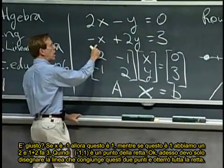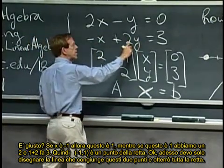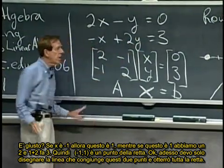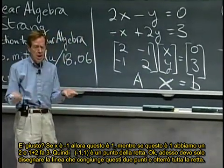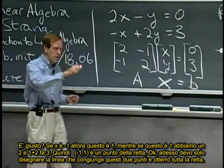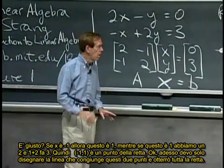If x is minus one, that's a one. If y is a one, that's a two, and the one and the two make three, and that point's on the equation. Okay, now I should just draw the line, right? Connecting those two points, that will give me the whole line.